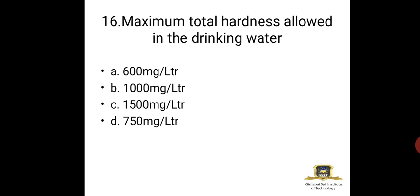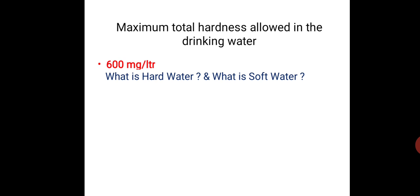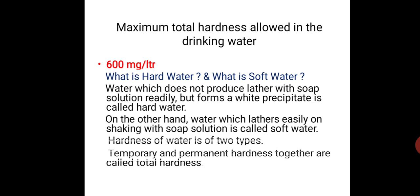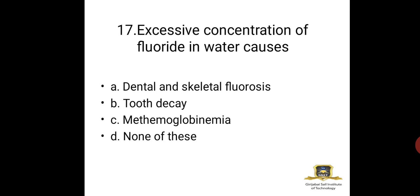Question 16: The maximum total hardness allowed in drinking water is — 600 mg/L, 1000 mg/L, 1500 mg/L, or 750 mg/L? As per Bureau of Indian Standards, the answer is 600 milligrams per liter. Hard water is water that does not produce lather easily when soap is used, while soft water produces foam easily. If water has more hardness it becomes hard water.